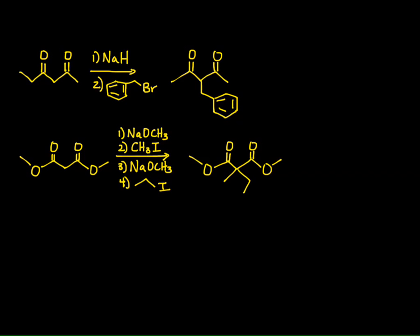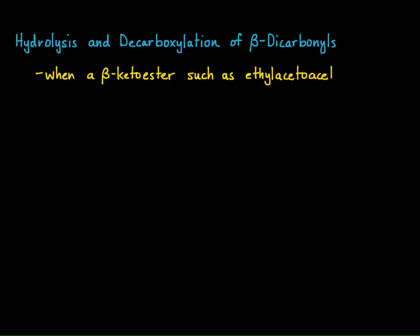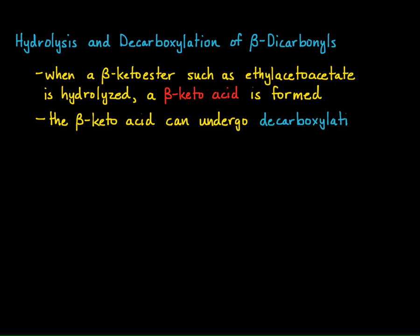That's how alkylation of beta-dicarbonyls looks. Now the process called hydrolysis and decarboxylation: these beta-dicarbonyls, if there is an ester portion, can undergo hydrolysis and decarboxylation. The key is that when a beta-keto ester such as ethyl acetoacetate is hydrolyzed, a beta-keto acid is formed. And we know that beta-keto acids can undergo decarboxylation. So we get hydrolysis followed by decarboxylation.